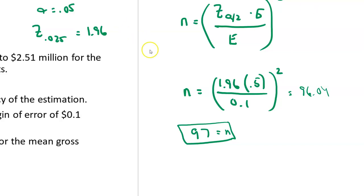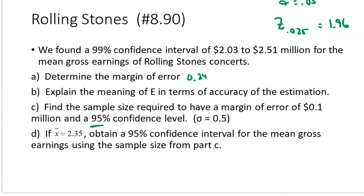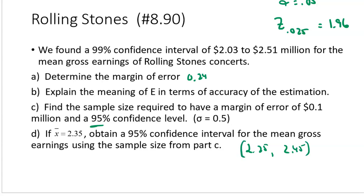The last question checks our work: with a sample mean of 2.35 and 95% confidence, the interval is between 2.25 and 2.45. Notice that the 99% confidence interval was wider (2.03 to 2.51) and the 95% confidence interval is narrower (2.25 to 2.45). If you want to be less confident, you can have a narrower interval; if you want to be more confident, you need a wider interval, because it gives you more room for making mistakes. That's it for this one.